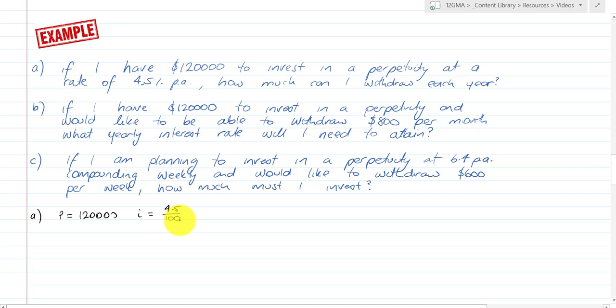Therefore, D equals 120,000 times 4.5 over 100, which equals $5,400. So I could withdraw from this perpetuity $5,400 each year and it would maintain a steady value of $120,000.